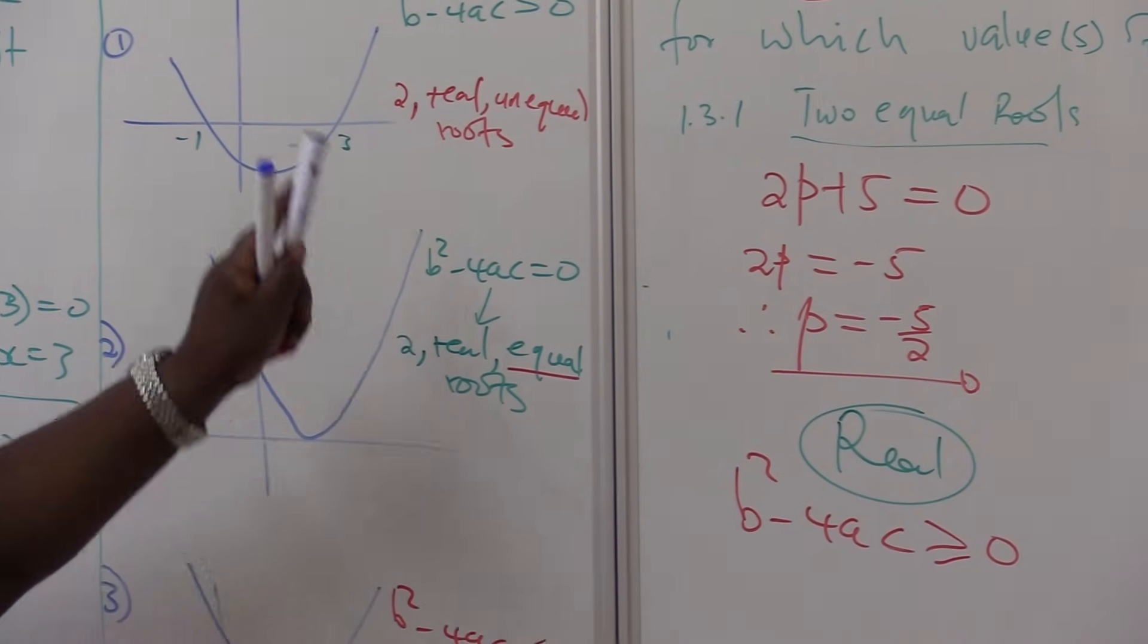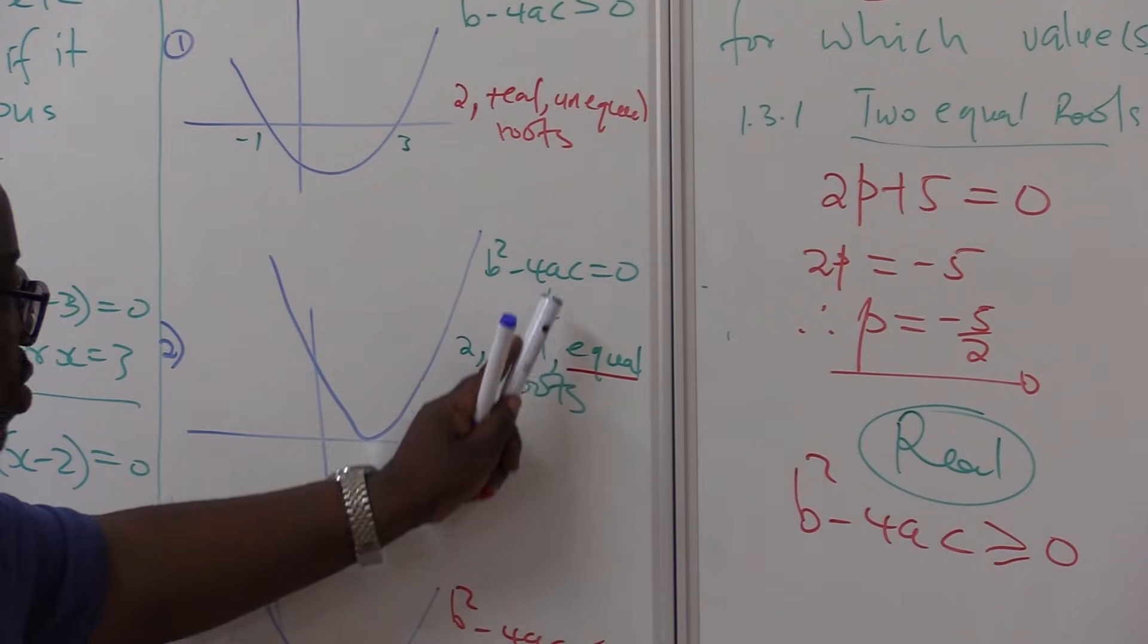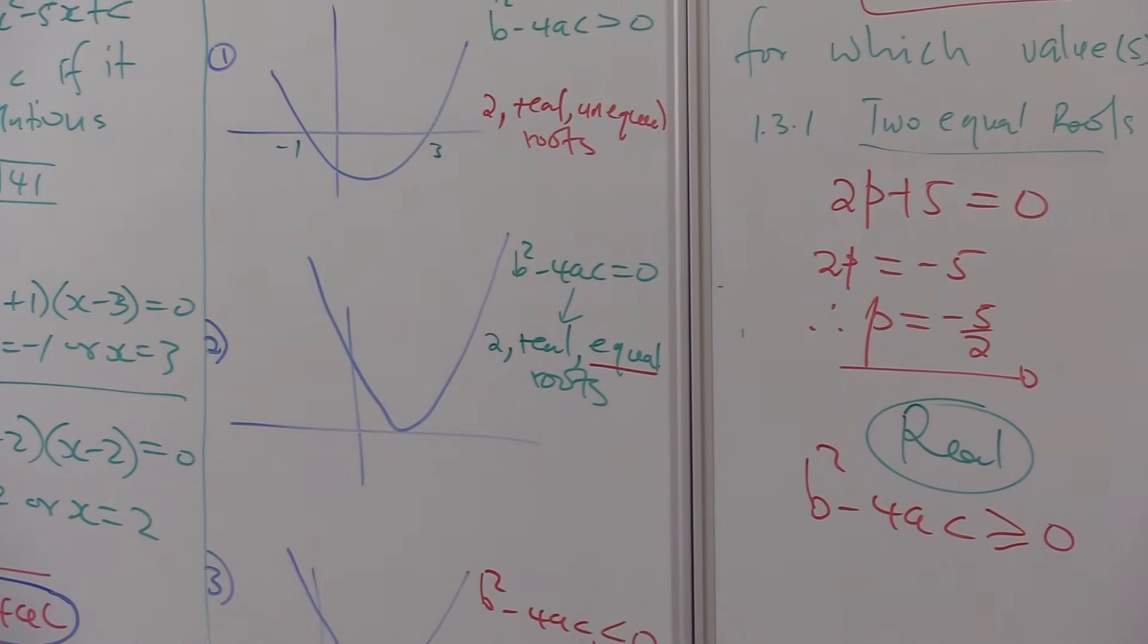But once you are specific, we say real and equal, we know that it is greater. Once you are specific, we say the roots are equal, it is only this one. b squared minus 4ac is equal to zero.